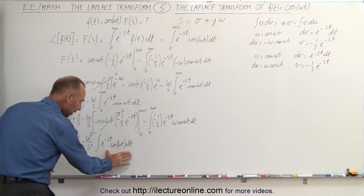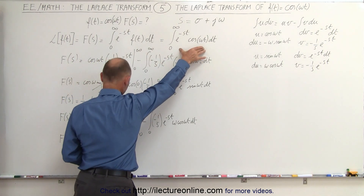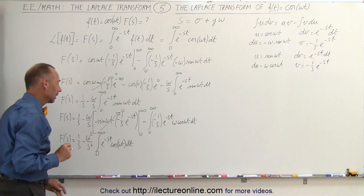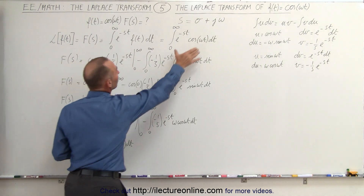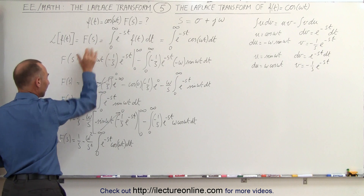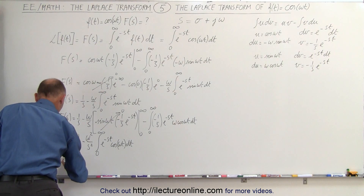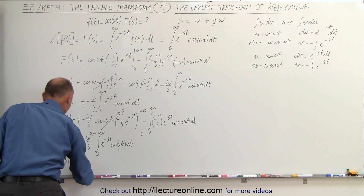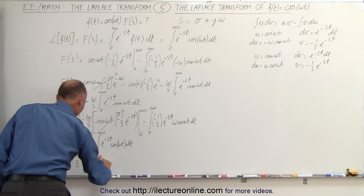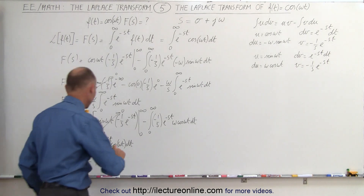Notice that this integral from 0 to infinity of e^(−st)·cos(ωt) dt is exactly the same as the original integral we started with, which was equal to F(s). So we can replace it by F(s). That technique — recognizing the original integral — is how we solve this. So F(s) equals 1/s minus (ω²/s²)·F(s).